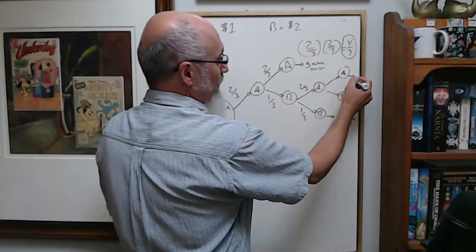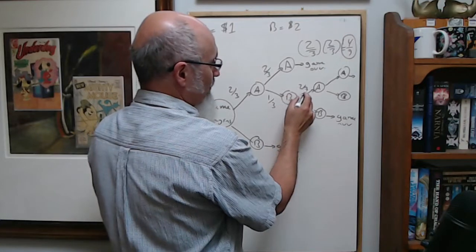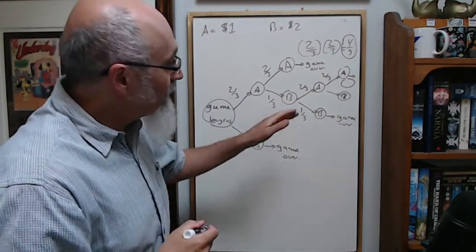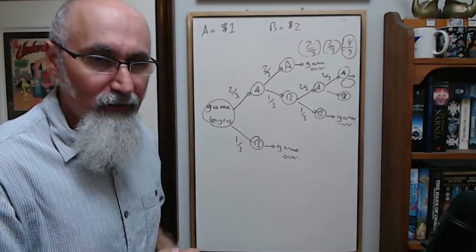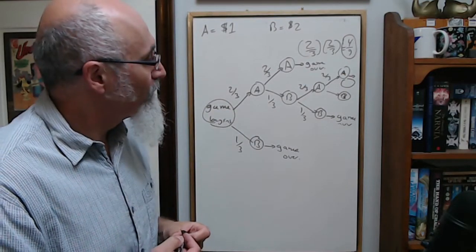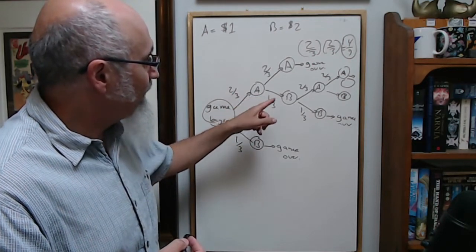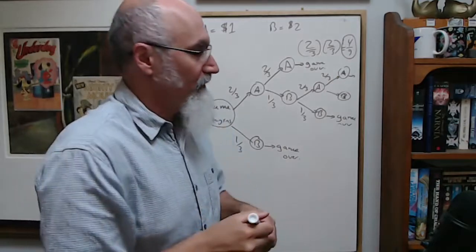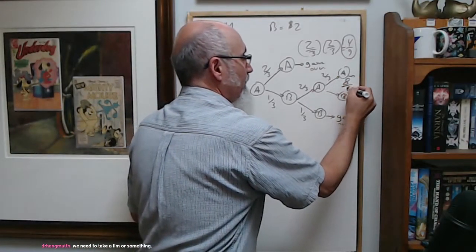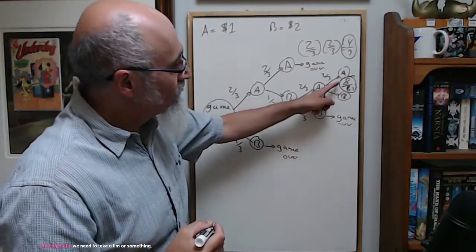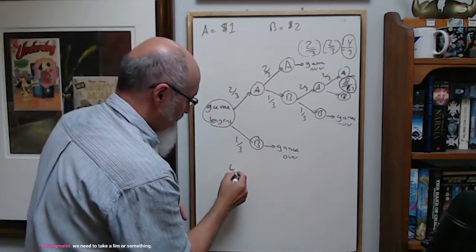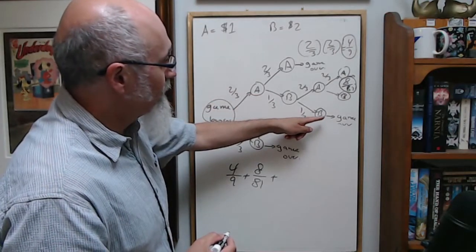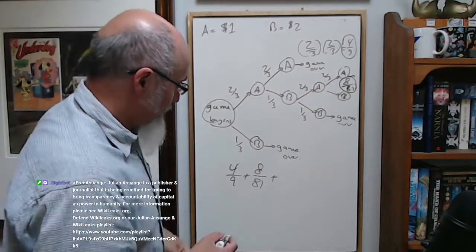And then over here again, you can do this calculation: would be 2/3 times 1/3 times 2/3 times 2/3, and you get a number here and you add that to that. And then you do a few more branches. What you're going to find out, it converges to a number. What is that number? That's going to be 8/81. So 8/81 plus 4/9.